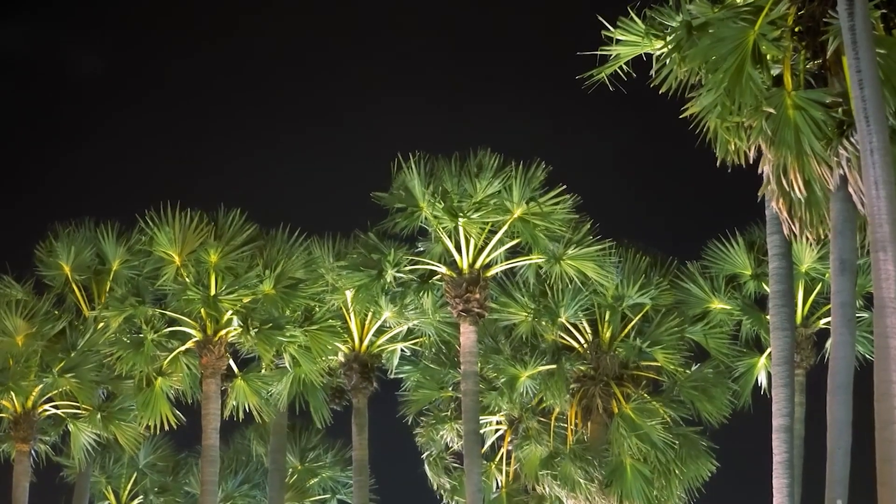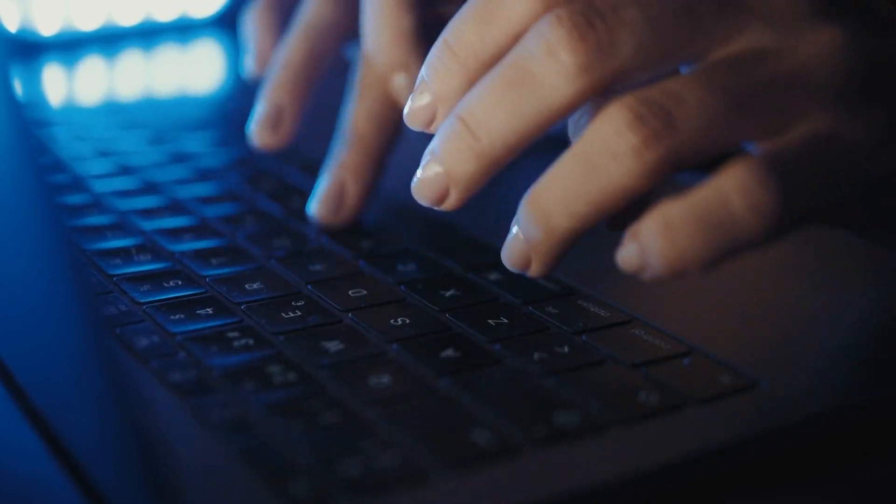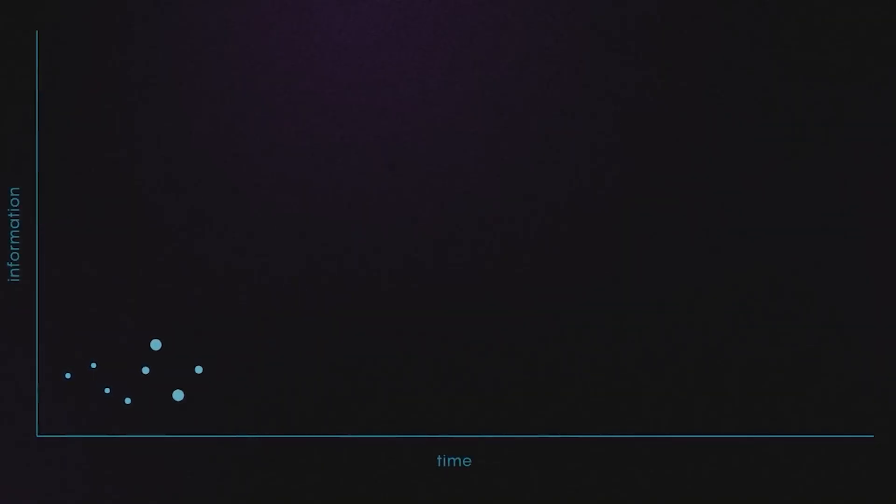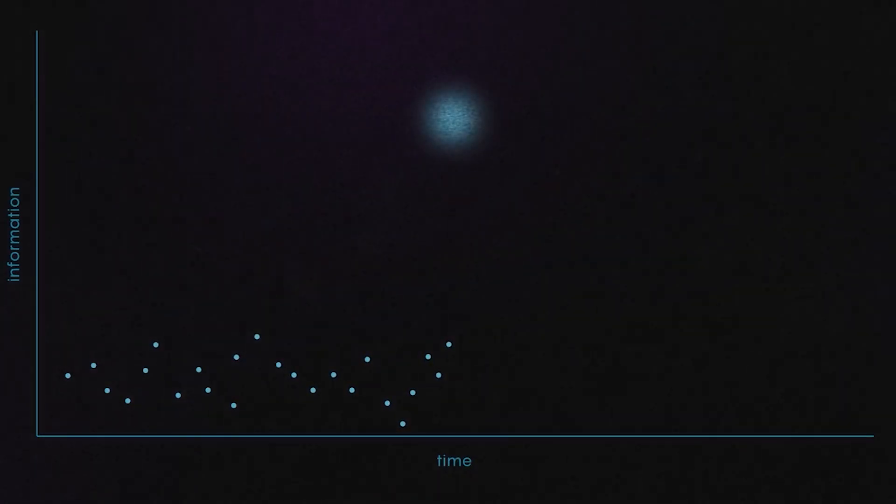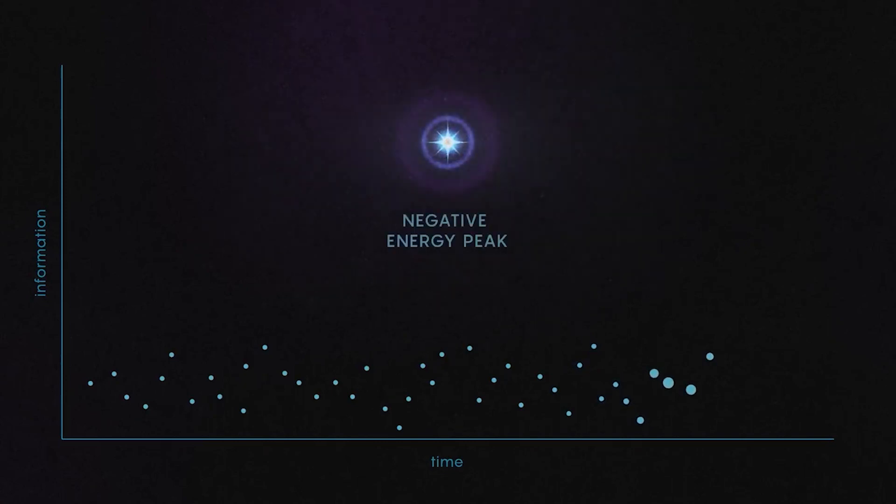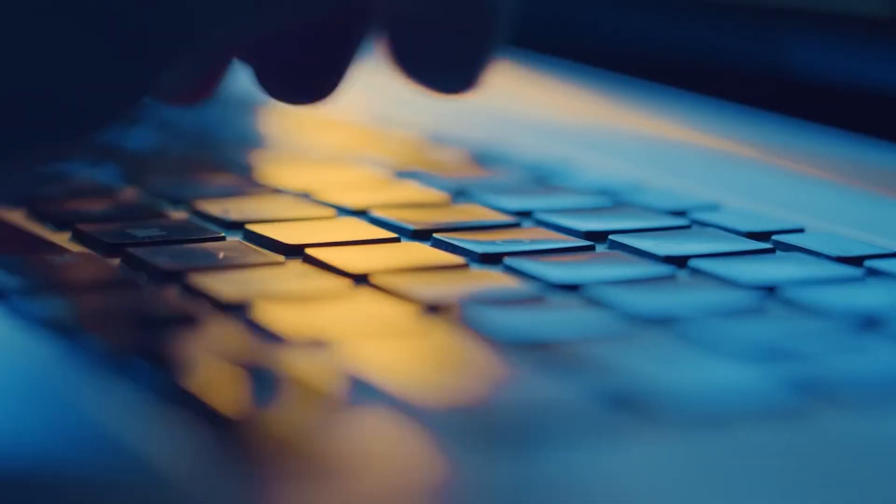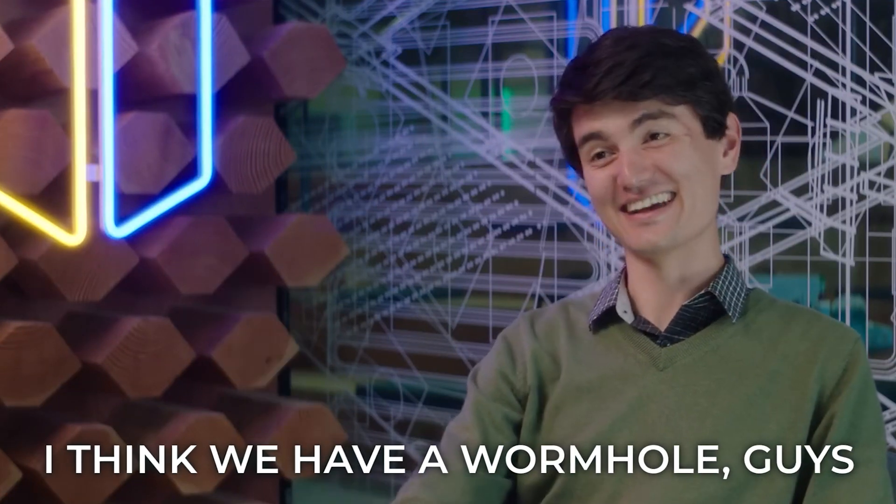Late into the night, monitoring the quantum circuits for the anticipated peak, a signal of the qubit traversing the wormhole, initial data appeared noisy. Skepticism lingered as the peak began to stabilize. Could this be the manifestation of a wormhole? The excited whispers of potential discovery fluttered among the team, leading to the exhilarating pronouncement: I think we have a wormhole, guys.